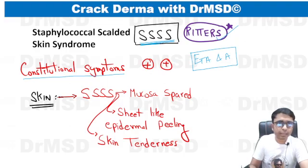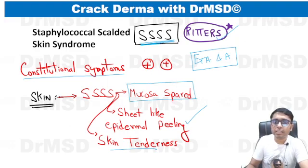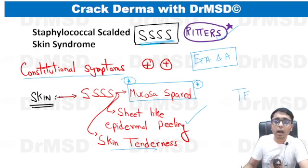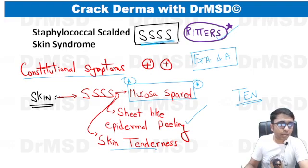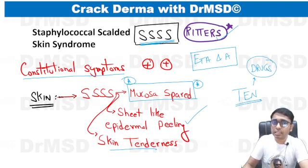Constitutional symptoms are present, and the skin will show sheet-like epidermal peeling with a lot of skin tenderness. Importantly, the mucosa is completely spared in these children — a very important differentiating feature from Toxic Epidermal Necrolysis, which is a deadly condition. Both conditions have almost all similar features, except in Toxic Epidermal Necrolysis drugs are the causative etiological factors, whereas in Staphylococcal Scalded Skin Syndrome it is the toxins.